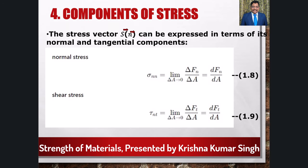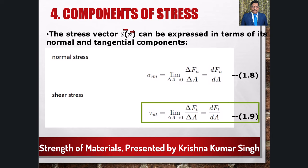आमतौर पर stress vector S(N) को उसके normal और tangential components में व्यक्त किया जाता है। हम normal और tangential stress को इस प्रकार define करते हैं: Normal stress के लिए sigma(NN) = limit जब area 0 के पास पहुंचता है, normal force में बदलाव और area में बदलाव के ratio के बराबर होता है। Shear stress के लिए tau(NT) = limit जब area 0 के पास पहुंचता है, tangential force में बदलाव और area में बदलाव के ratio के बराबर होता है।